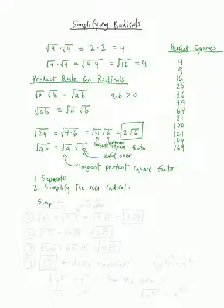Let's do some practice problems. The square root of 45: looking at the list, the largest perfect square that goes in is 9. So this equals the square root of 9 times 5, which I can write as square root of 9 times square root of 5, which becomes 3 square root of 5. That's my answer.